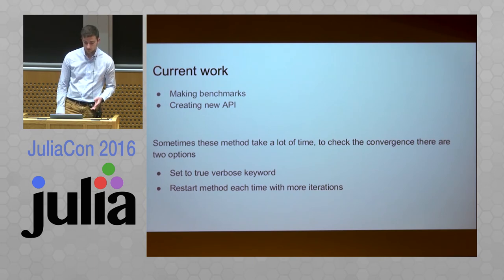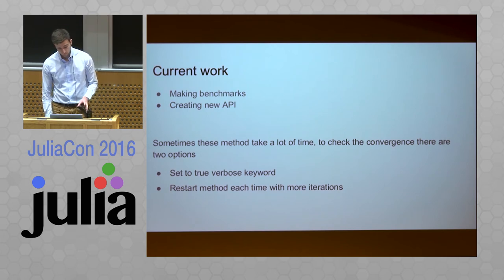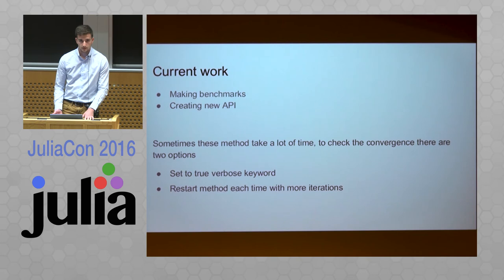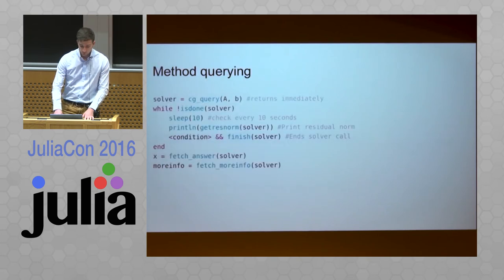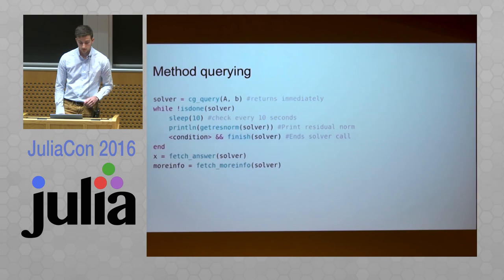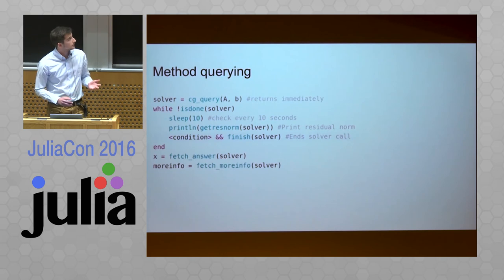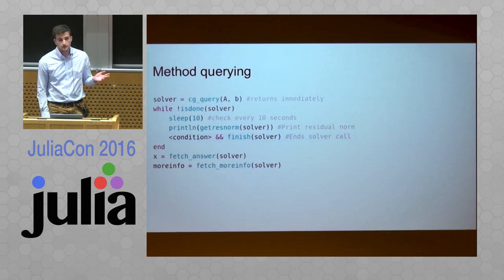To introduce this new feature — there's a problem: sometimes this method takes a lot of time to converge. To know the status of the method, you would have to set verbose to true and see how the convergence is doing, but you can only do this manually. What I'm trying to introduce is that you get a placeholder, check if it's done, do whatever you want, sleep, and query some information — for example, get the residual norm. You can really get whatever you want from the method, put a new condition to finish it, and fetch the partial answer and more information.